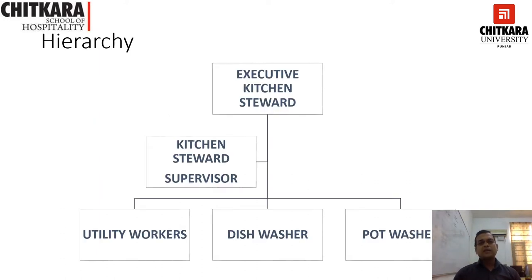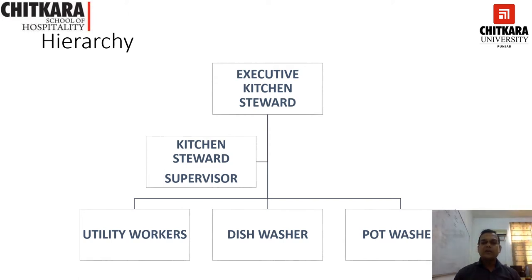The hierarchy of the kitchen stewarding department is straightforward. At the top is the Executive Kitchen Steward, who is the head of the department. Below that is the Kitchen Steward, who is the supervisor. Below that are three different ranks: utility worker, dishwasher, and pot washer.